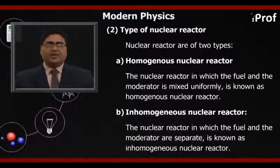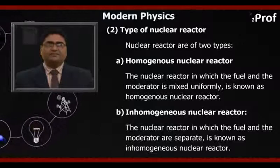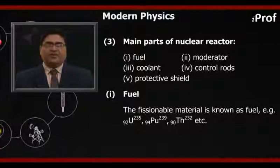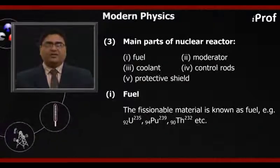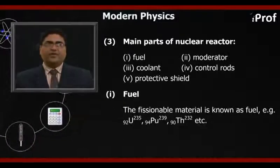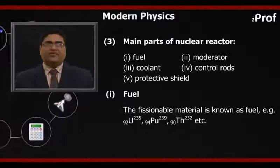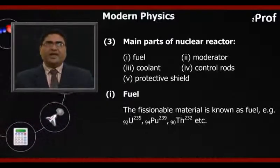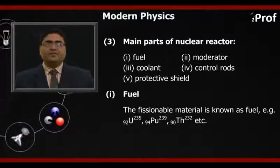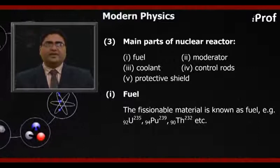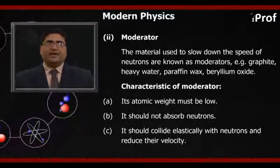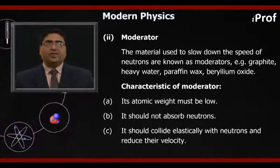Main parts of nuclear reactor: first, fuel; second, moderator; third, coolant; fourth, control rods; fifth, protective shields. First, fuel: the fissile material is known as fuel — for example, uranium-235 (92U235), plutonium-239 (94Pu239), thorium-232 (90Th232), etc. Second, moderator: the materials used to slow down the speed of neutrons without their absorption are known as moderators.